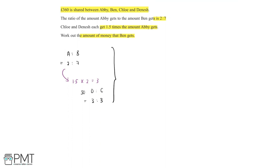We can now say that the ratio of the amount Abby gets to Ben to Chloe to Dinesh is 2 to 7 to 3 to 3. Now we can total up the ratios: 2 plus 7 plus 3 plus 3 is equal to 15, so this makes up 15 parts in total.